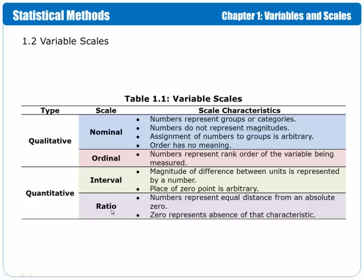So, in nominal, the numbers represent just groups or categories. The numbers don't represent magnitude, there's no order, and the assignment of a number to a group is arbitrary. So, an example of that would be, like, male versus female. And so, you have, okay, let's use a number zero to represent female and number one to represent males. Well, we could have just as easily used a one to represent females and a zero to represent males, because the number has no meaning to it, and the order has no meaning to it.